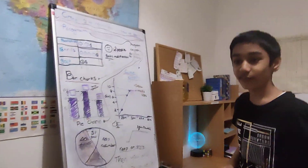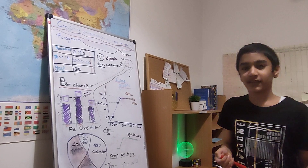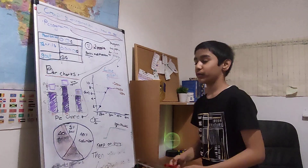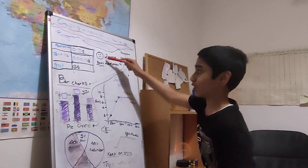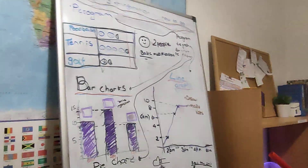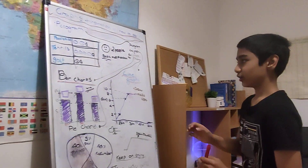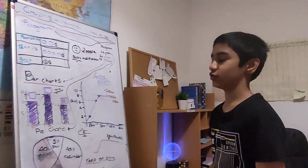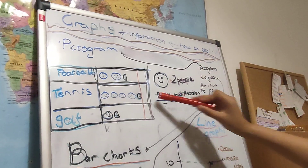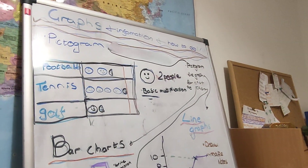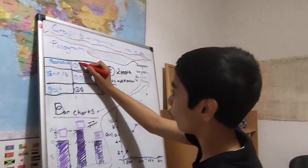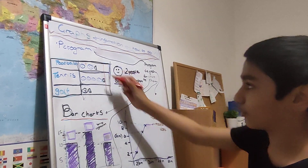First up are pictograms. The reason it's called pictograms is because it's got 'pic' which stands for picture — usually in pictograms we have pictures which represent an amount. So as you can see, a smiley face equals two people. What you usually have to do is basic multiplication. One smiley face is two people, and two smiley faces means two times two is four people.